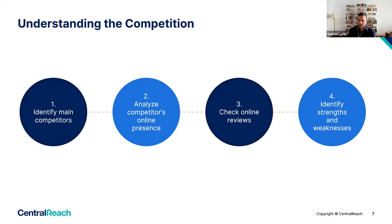Open up your computer, do a Google search within your area for ABA practices, perhaps with the services you're also planning to provide. Write down a list of all the different competitors, whether they're big or small, and get a general idea of what your competition is going to look like. You also want to analyze your competitors' online presence — review how they're marketing their business, what their customer experience online is like, what their social media presence looks like, whether they blog, and what their website looks like.